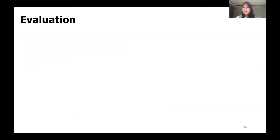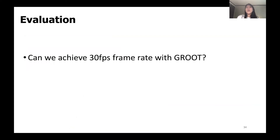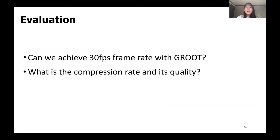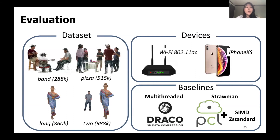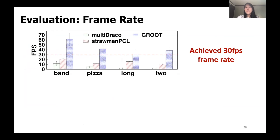We now show evaluation results, answering three questions: Can we achieve 30 FPS frame rate with GROOT? What is the compression rate and quality? And how fast and effective is interactive user view adaptation? Our setup uses four datasets with 300k to 1 million points, tested using 802.11ac Wi-Fi on iPhone XS, with the optimized mobile versions of Draco and Point Cloud Library as baselines. The frame update rate graph shows that GROOT achieves 30 FPS for all datasets, and for smaller datasets like the band, we could reach up to 60 FPS.